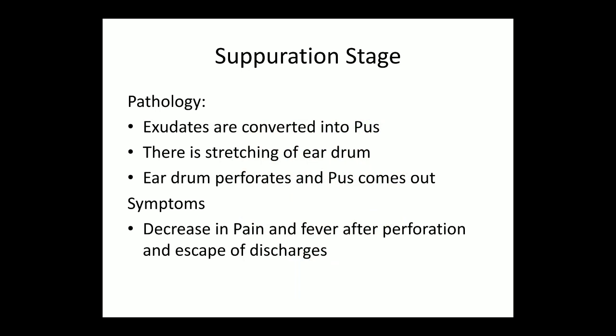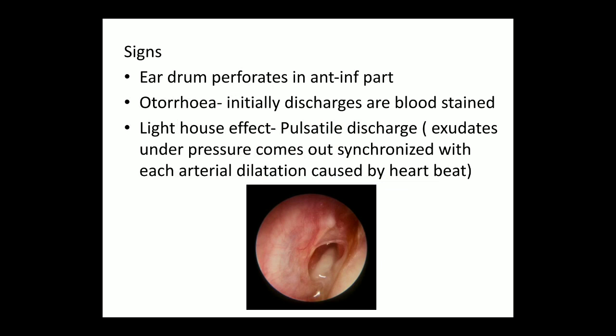The third stage is the suppuration stage. Pathology: the exudate converts into pus, there is stretching of the eardrum, the eardrum perforates, and pus comes out. Symptoms: decrease in pain and fever after perforation and escape of discharge. Signs: the eardrum perforates in the antero-inferior part, otorrhoea with initially blood-stained discharge, and the lighthouse effect — pulsatile discharge where exudate under pressure comes out synchronized with each arterial dilatation caused by the heartbeat.